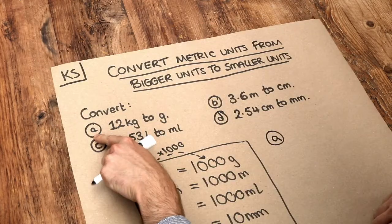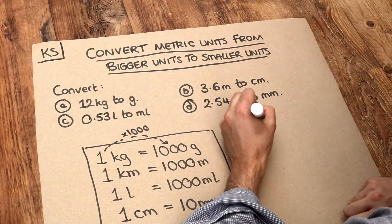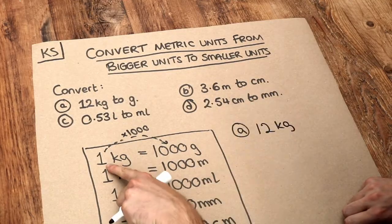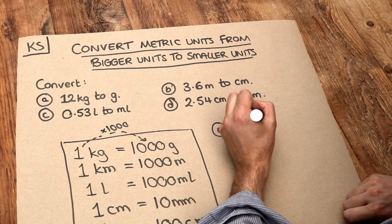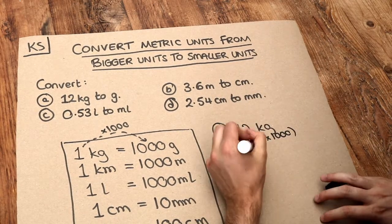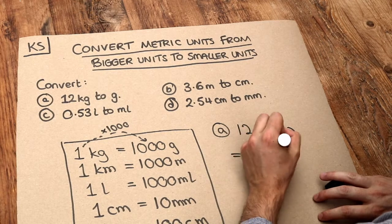So for A, if we've got 12 kilograms, to get from kilograms to grams, we have to times by a thousand. So if we times this by a thousand, then 12 times a thousand is 12,000 grams.